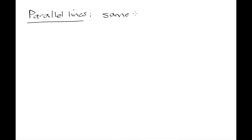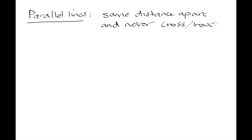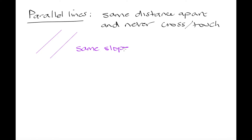Now that we know how to calculate the gradient of a line, I want to talk about how that relates to parallel and perpendicular lines. Parallel lines are lines which are the same distance apart and are never going to cross or touch. If we have two lines which always maintain the same distance apart and never touch, these lines are never going to cross each other — the distance between them remains the same. When we have two lines like this, they need to have the same slope. So parallel lines are going to have equal slopes, and if we know the slopes of both lines are equal, we can conclude that those lines are parallel to one another.